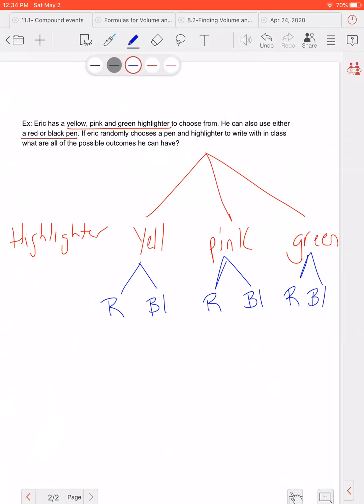Okay. Now again, if I want to write all the possible outcomes, the tree diagram just kind of helps me decide that. So I could have a yellow highlighter with a red pen, a yellow highlighter with a black pen. I could have a pink highlighter with a red pen, or a pink highlighter with a black pen. I could have a green highlighter with a red pen, and a green highlighter with a black pen. Now again, I'm shortening these. If you want to write out the full wordage, that's fine. But I have six different options in class.